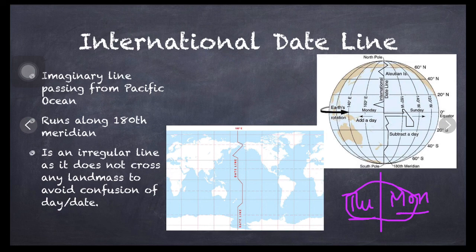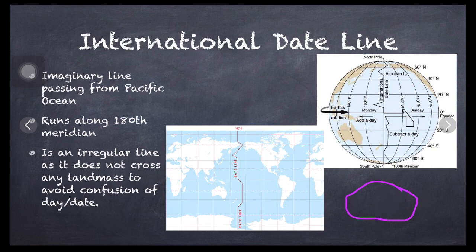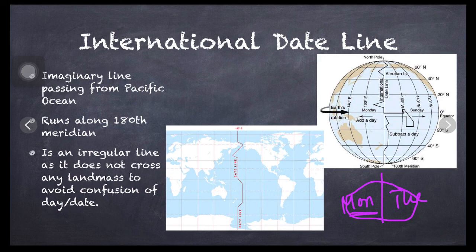So based on that we need to see that eastern hemisphere will have Tuesday and western hemisphere will have Monday. But on the same landmass there will be confusion of whether today is Tuesday or Monday.